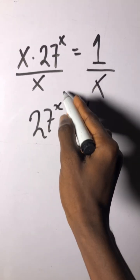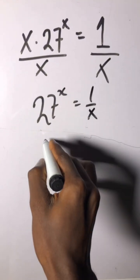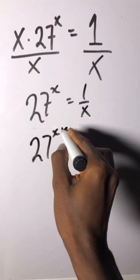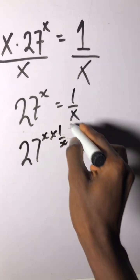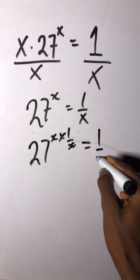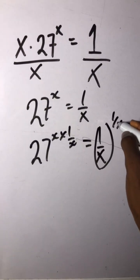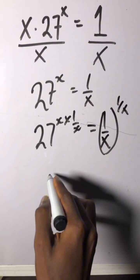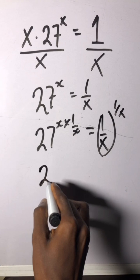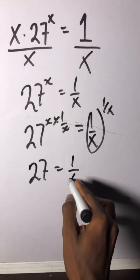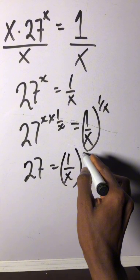Now we need to multiply, we need to deal with this index here. We need to multiply both sides by inverse of this. This cancels this, I'm left with 27 equals 1 over x to the power of 1 over x.